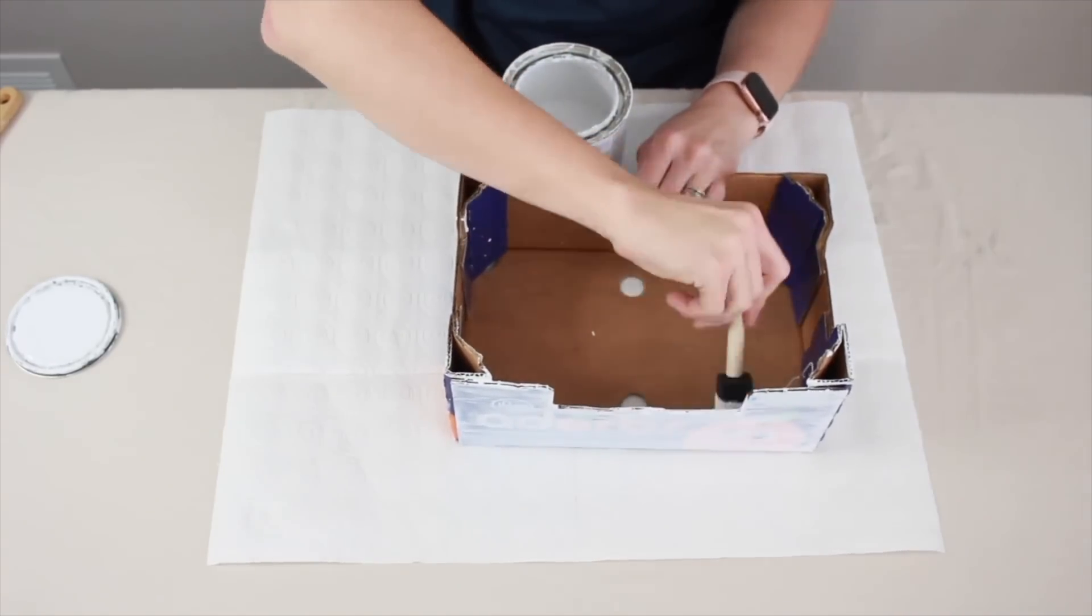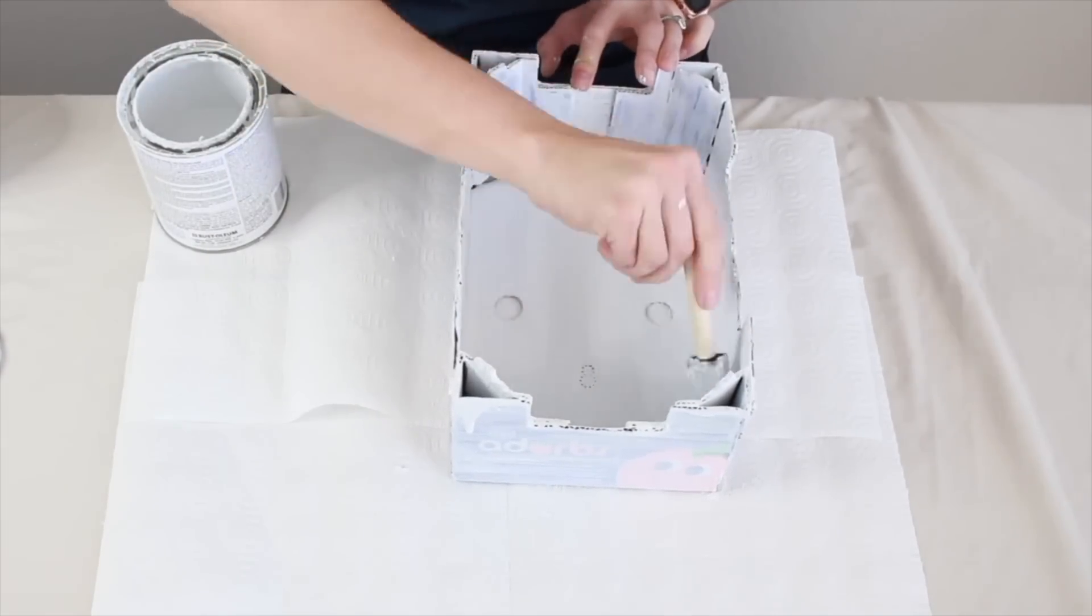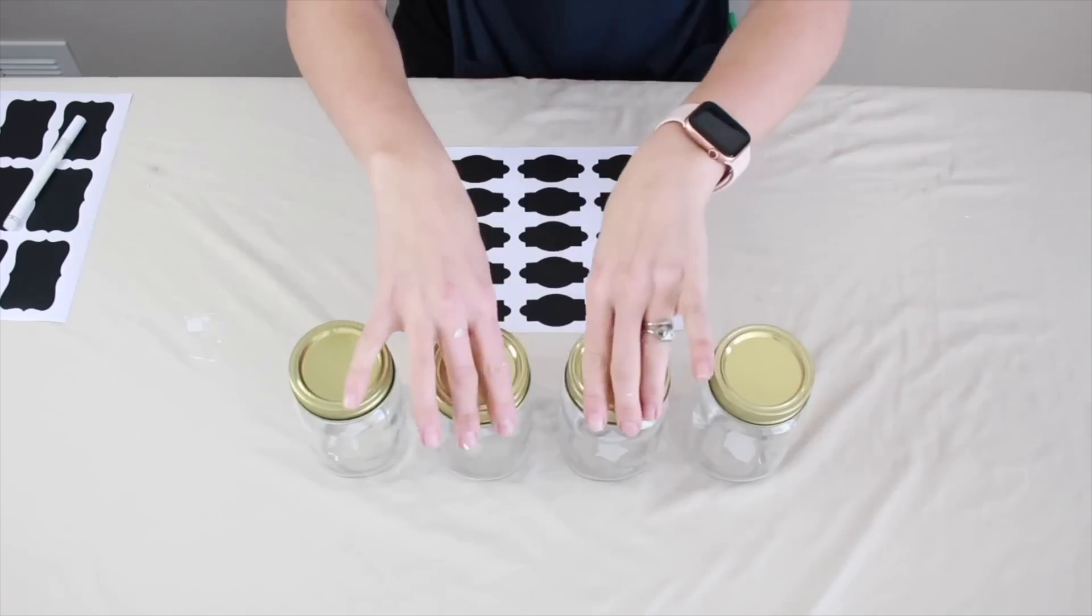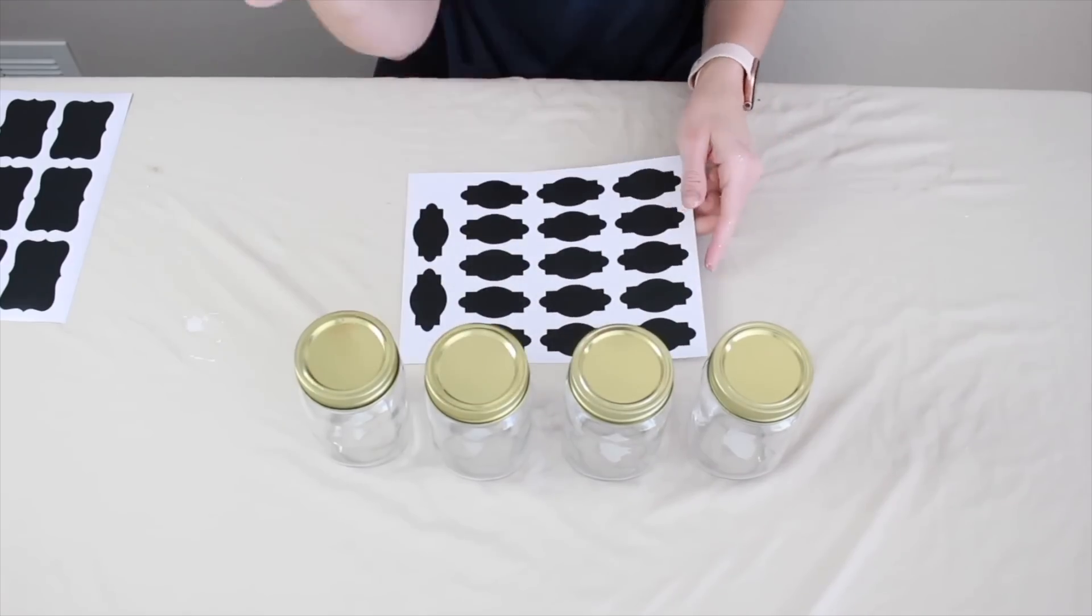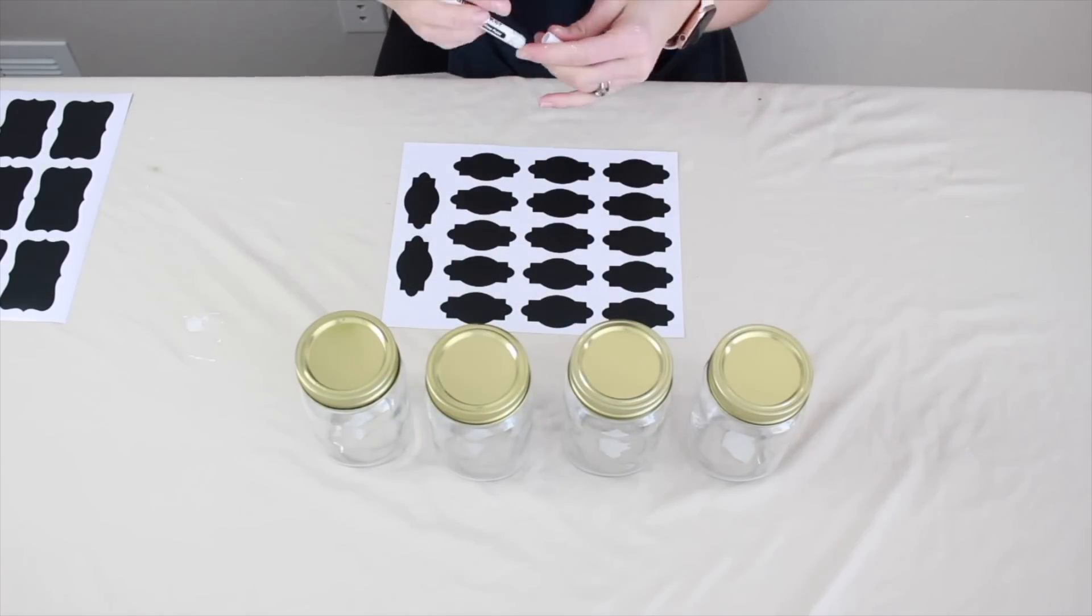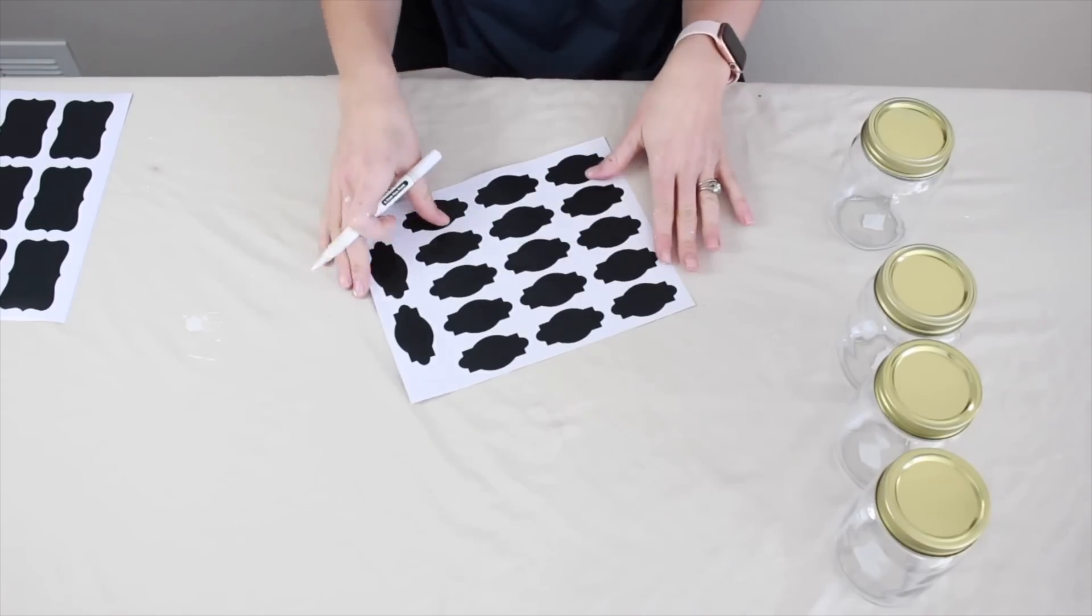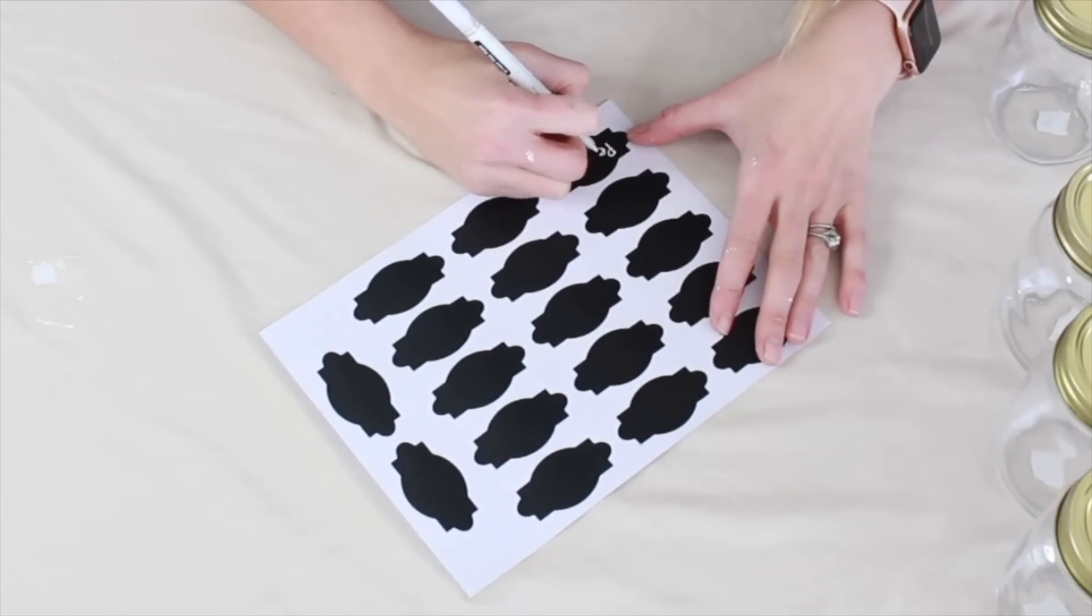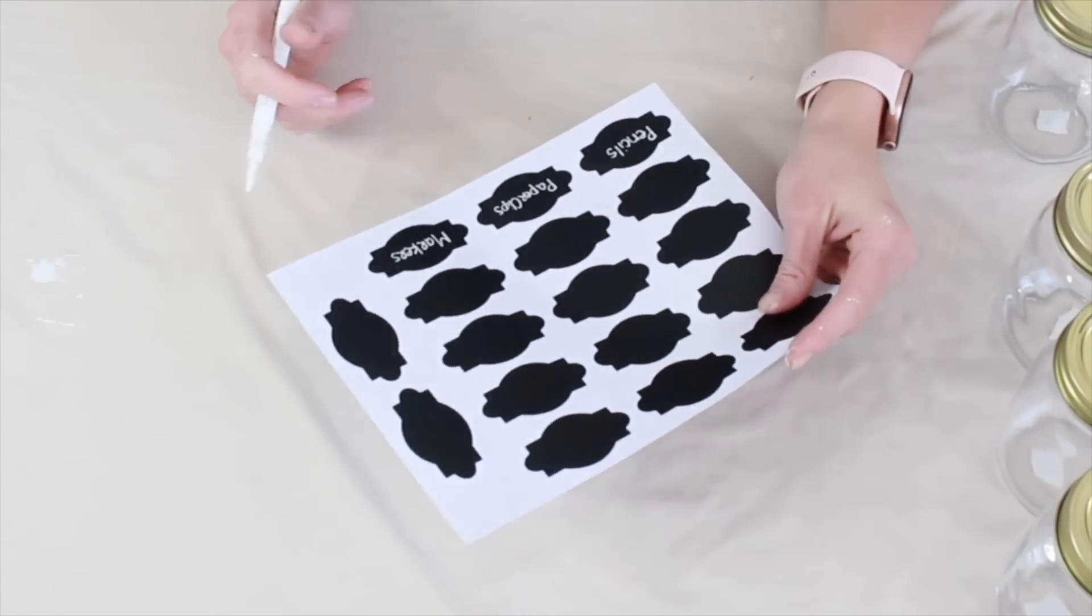So the next part of this project is acquiring some jars. I actually got these jars from Hobby Lobby and they were 50% off, so I got a great deal on these. And I also got some chalkboard labels. So you're going to use either a paint marker or a chalkboard marker. I'm going to write on these chalkboard labels what I'm going to be putting in each of these jars. I like to write on a flat surface, so I highly recommend writing out your labels before you stick them on your jars. So we're going to write pencils. I'm also going to be doing paper clips. We have markers. And colored pencils.